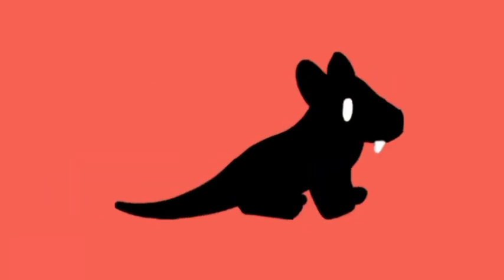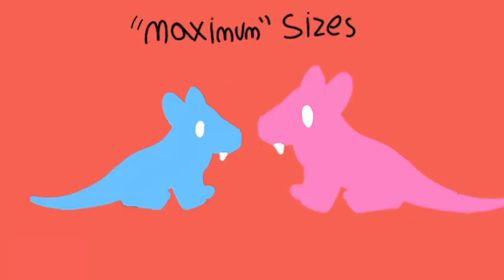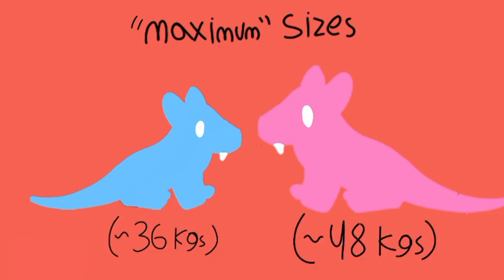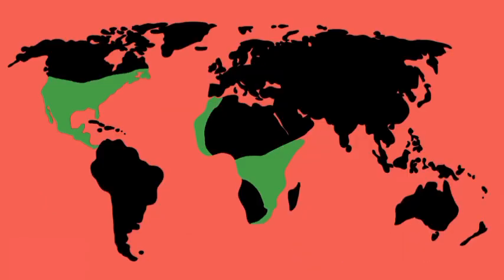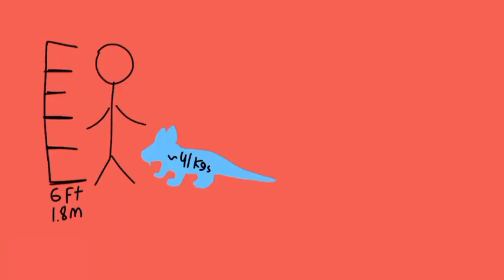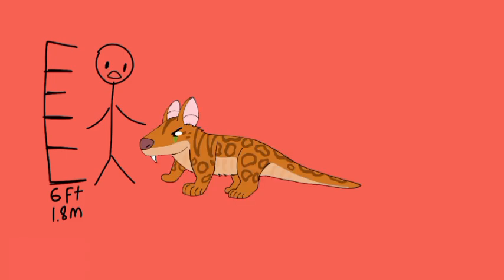Since O4s never truly stop growing, this has caused some populations to grow much larger than expected. Usually, the upper limit for male and female O4s are 80 and 105 pounds respectively. However, some areas, particularly in Africa and North America, have seen males reach 90 pounds, and some females have been reported to be 7.5 feet long and 120 pounds. There have also been reports of O4s even larger than this, but they are likely just exaggerations. Hopefully.